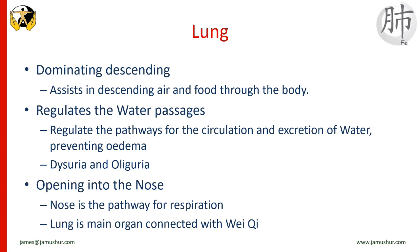When lung qi fails to protect the surface of the body, there may be frequent spontaneous perspiration. The lungs also dominate descending and regulate the water passages. As a general rule, the upper zangfu organs have the function of descending, and since the lung is the uppermost zang organ, its qi descends to promote the circulation of qi and body fluids through the body. Dysfunction in descending may lead to upward rebellion of lung qi, with symptoms such as cough and shortness of breath. Dysfunction may also result in edema, painful or difficult urination, and decreased production of urine.